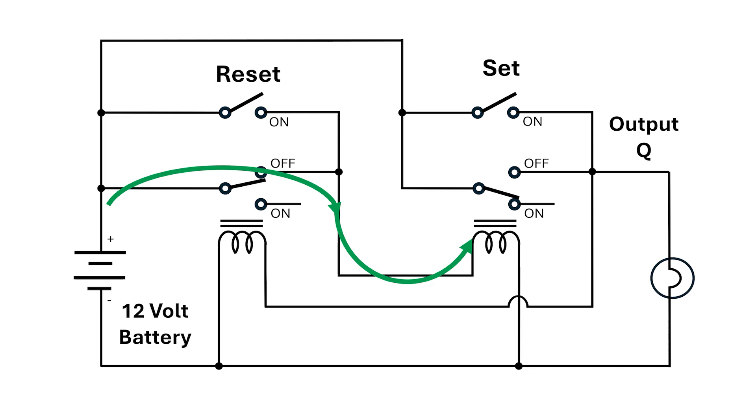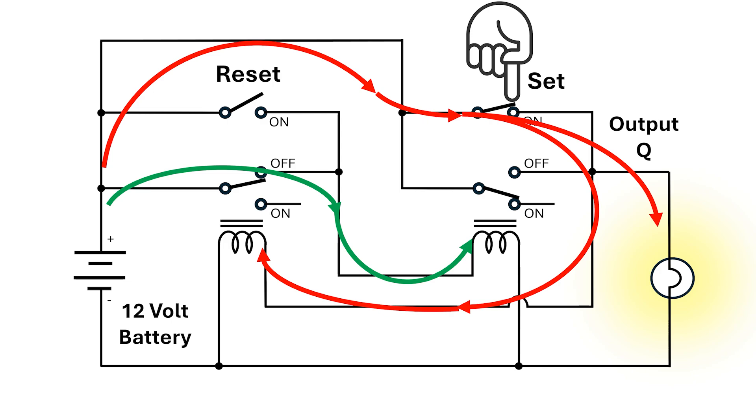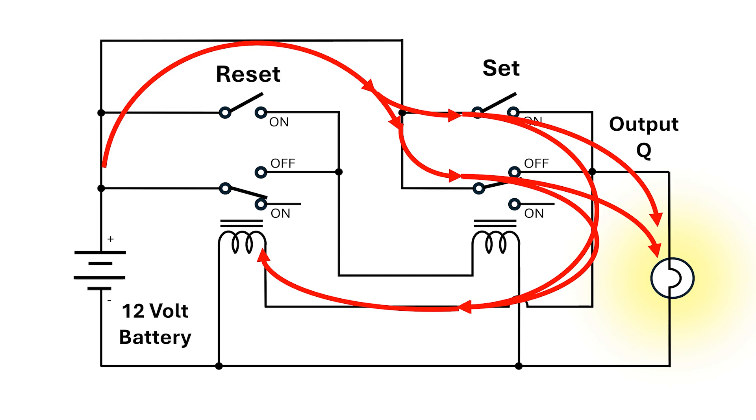We're nearly there. If I press the set button, we establish this red pathway which will energize the left coil. This turns on the left relay switch, which means we lose the green pathway for power to the right coil. It turns off and creates a second pathway for maintaining this configuration. So even when I release the set switch, we stay in the lamp on configuration.